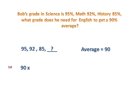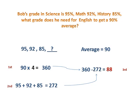So first step, we multiply the average by the total number of grades, in this case 4. And so that is equal to 360. Second step, add up the three grades. 95 plus 92 plus 85. That is equal to 272. Third step, this is the last step. Well, actually, not really the last step if you want to check your work. Third step, you subtract the first step minus the second step. And so your answer is 88.